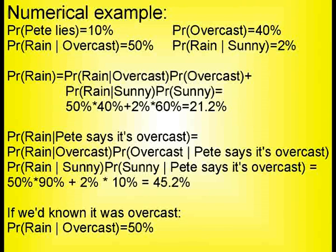In fact, the probability has doubled and then a little. If you had known it was overcast instead of having to rely on Pete telling the truth, we would have landed on 50% probability of rain instead. It's worth noting that if we have evidence A for B, which is evidence for C, this will always be poorer evidence than if we had directly observed B. So the probability of C given A will always lie somewhere between our initial probability of C and the probability of C given the more direct evidence B.